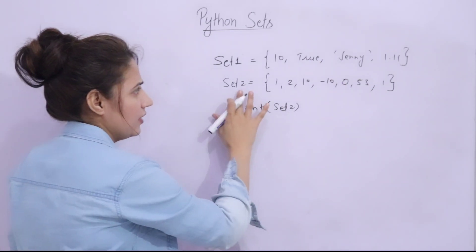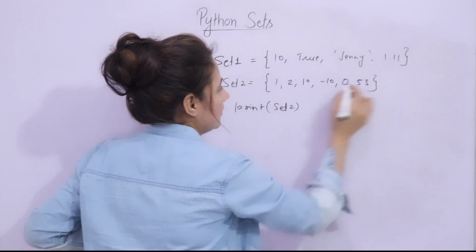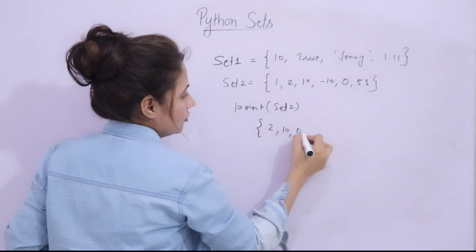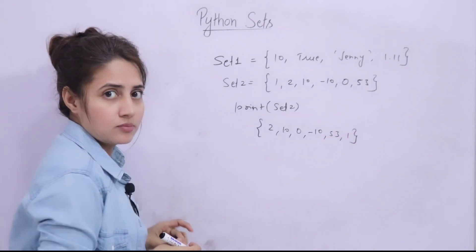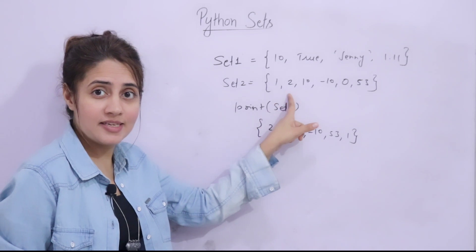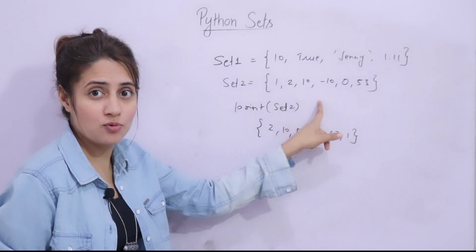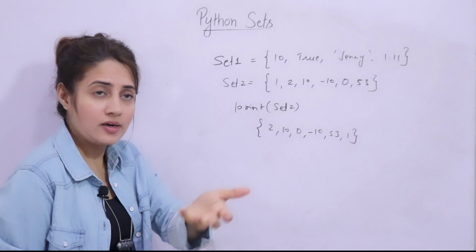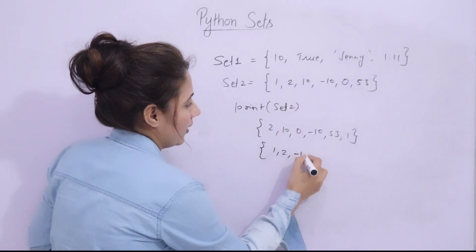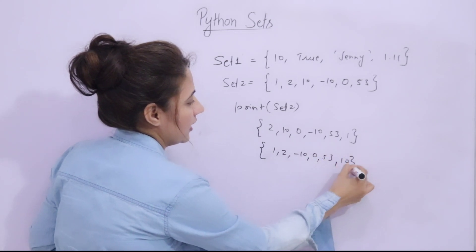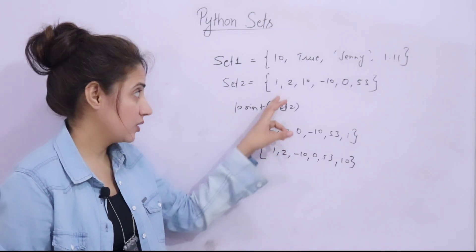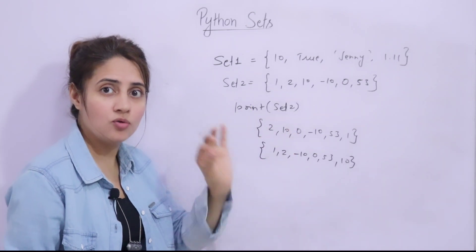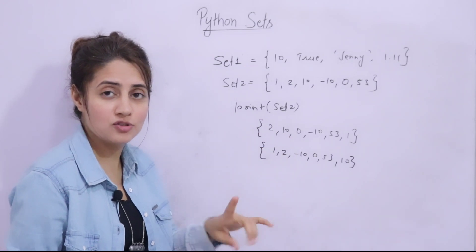Why are sets unordered? If I create a set and print it, I might get items in one order — say 2, 10, 0, minus 10, 53, 1 — but there is no guarantee I'll get the same sequence every time I run the program. Running it again might give a completely different order like 1, 2, minus 10, 0, 53, 10. That is why set items are unordered with no defined order. In tuples and lists, items are ordered.